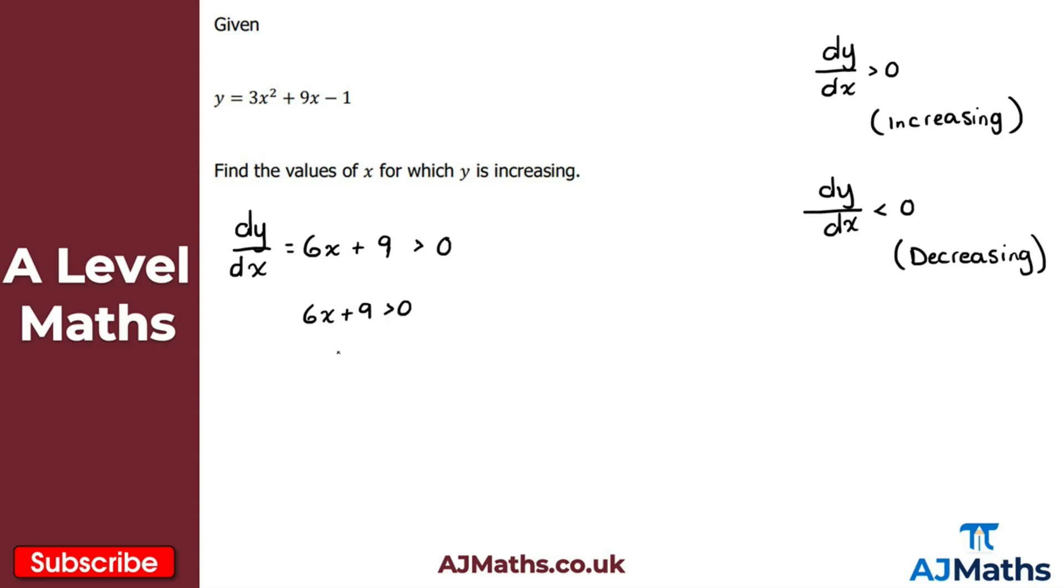What I'm going to do then is subtract nine from both sides, so we get 6x is greater than minus nine. And now we divide by the coefficient here of x, which is six. So therefore x must be greater than minus nine over six, which is the same as x being greater than minus three over two. And therefore that's the values of x for which y is increasing, and that gives us a solution to the first question.